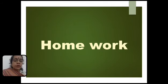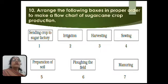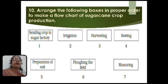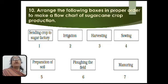In page number 14, you can see question number 10. This question is given in your NCERT book on page number 14. The question is: arrange the following boxes in proper order to make a flowchart of sugarcane crop production.